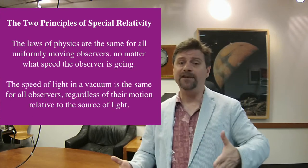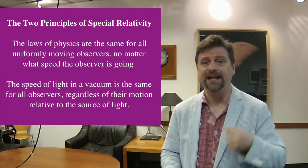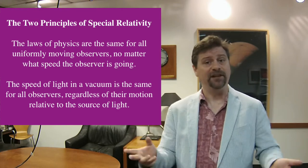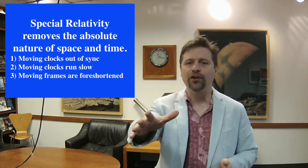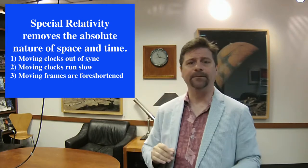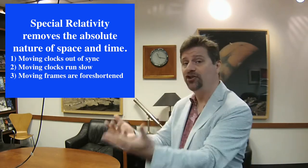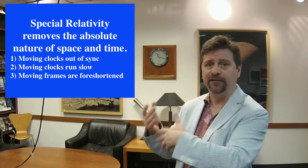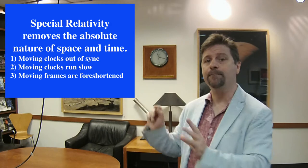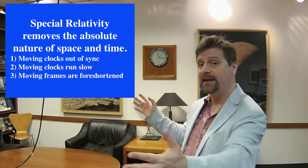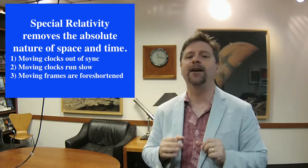We found some implications for that, given that everyone measures the same speed for the speed of light. The speed of light is a constant no matter who measures it — that is the other axiom of special relativity. One implication is that moving clocks are out of sync with clocks ahead in the reference frame being observed. Moving clocks appear to run slower. And the entire reference frame appears to be shortened in the direction of motion.